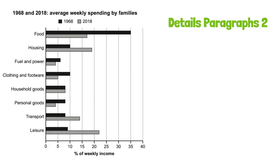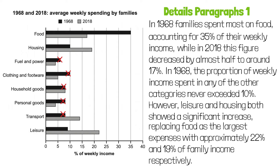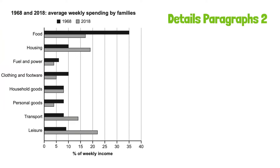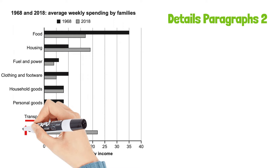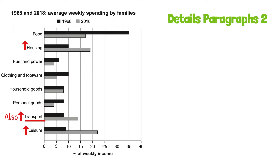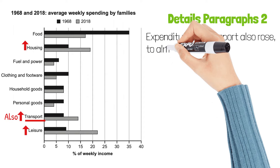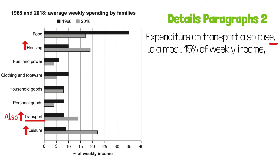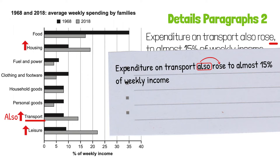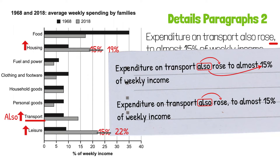Now details paragraph 2 covers the remaining five categories. We don't need to report their figures in 1968 because in the last paragraph we've already said that they never exceeded 10%. I would start this paragraph with transport. We can use 'also' to make the two paragraphs coherent: expenditure on transport also rose to almost 15% of weekly income. The comma is necessary — without the comma, 'also' not only modifies 'rose' but also modifies the number 15%, which would mean that leisure and housing also increased to almost 15%. But leisure and housing increased to 22% and 19% respectively. With the comma, 'also' only modifies 'rose.' What transport, housing, and leisure have in common is that they all rose, so we definitely need the comma.